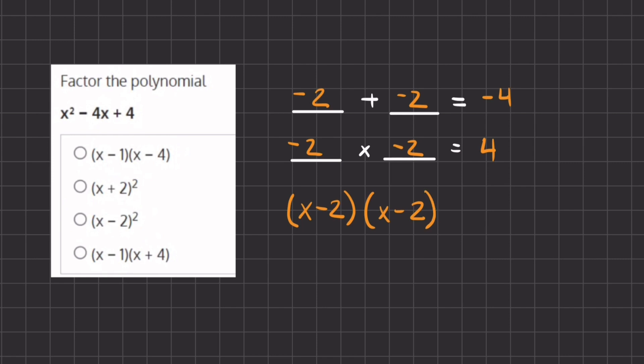That's how we will factor this polynomial. And if we simplify this, because they are both the same two terms, we can simplify it and say that x minus 2 squared is our final answer for factoring this polynomial.